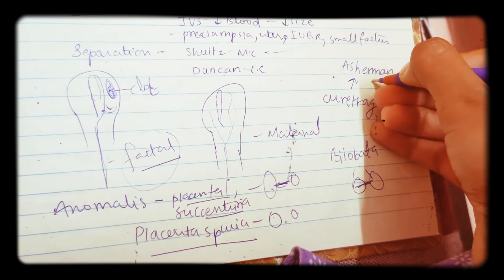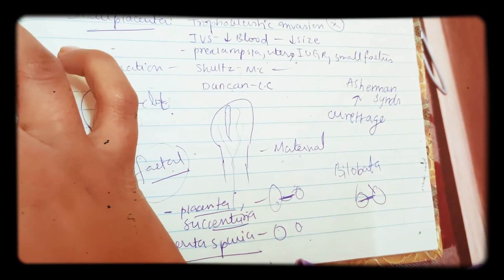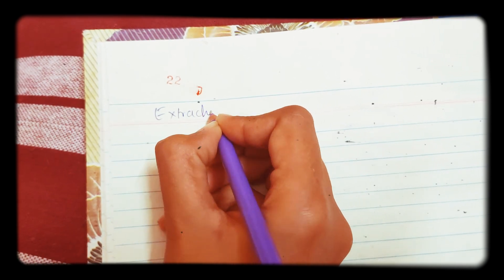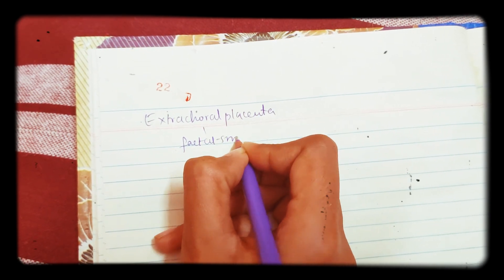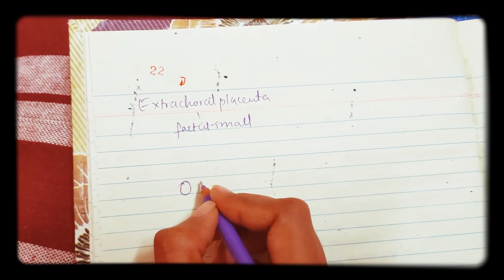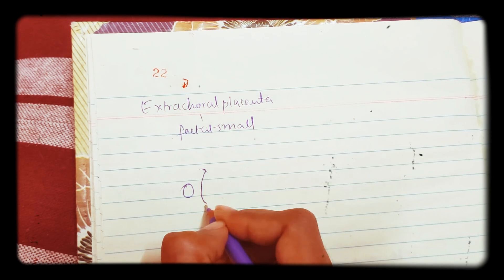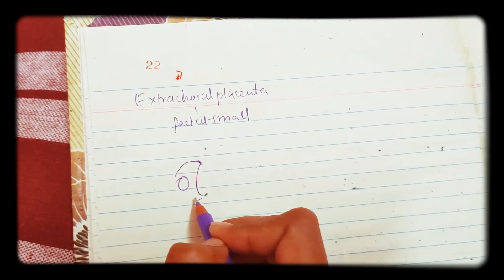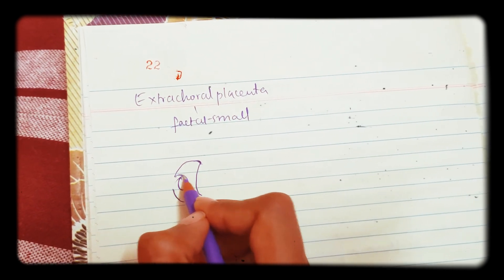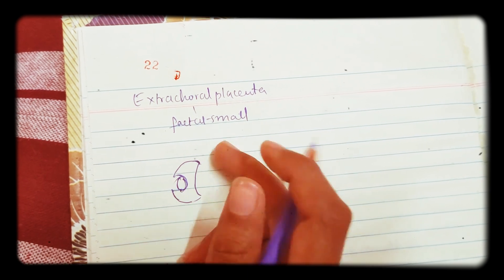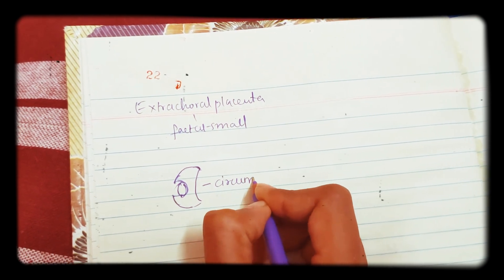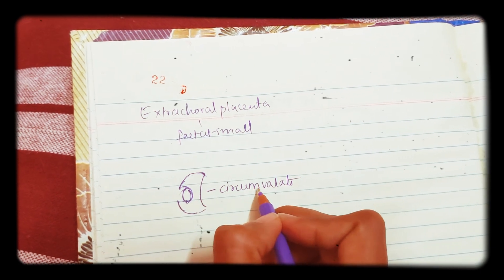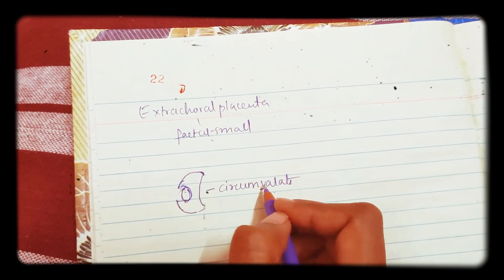Now let us discuss extrachorial placenta. In extrachorial placenta the fetal side is very small whereas the maternal side is very big. Because the maternal side is larger, it encloses the fetal side forming a valve-like projection, with the fetal side somewhat lower. This type is called circumvallate — easy to remember because 'v' for valve-like projection.